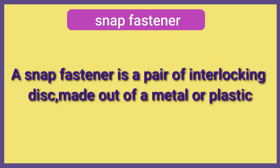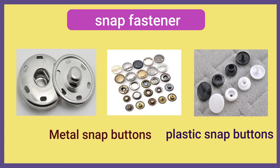Let us know something about snap fasteners. A snap fastener is a pair of interlocking discs made out of metal or plastic, commonly used in place of buttons to fasten clothing. Let us have some examples of snap buttons.